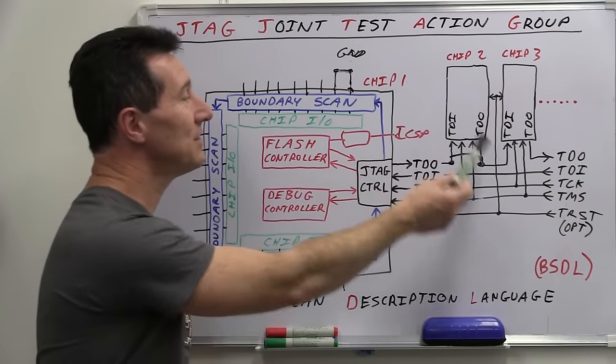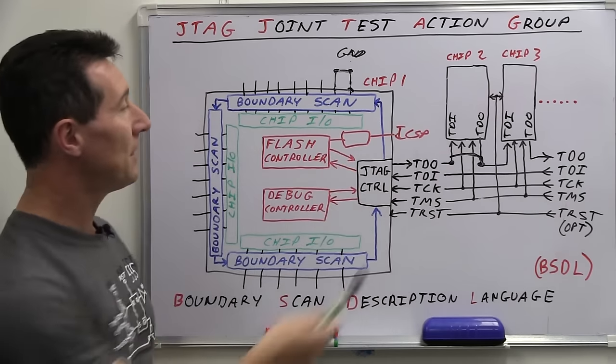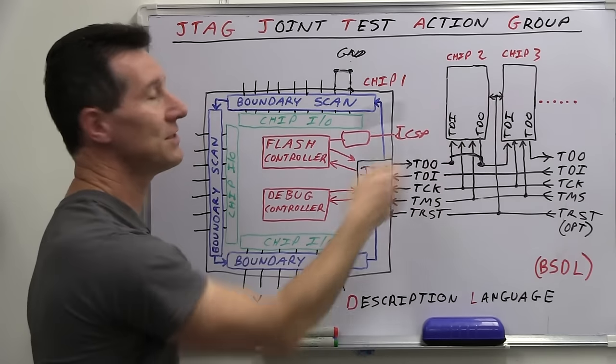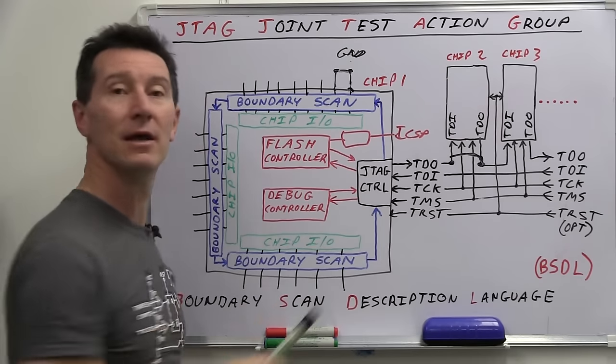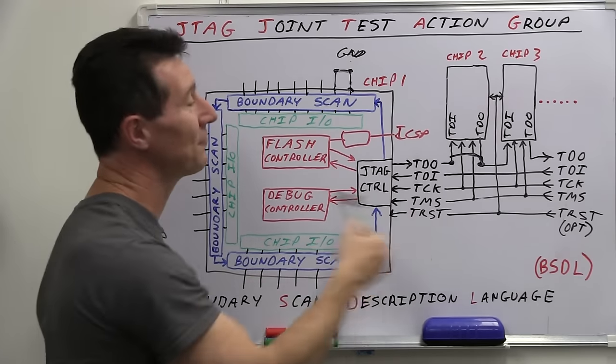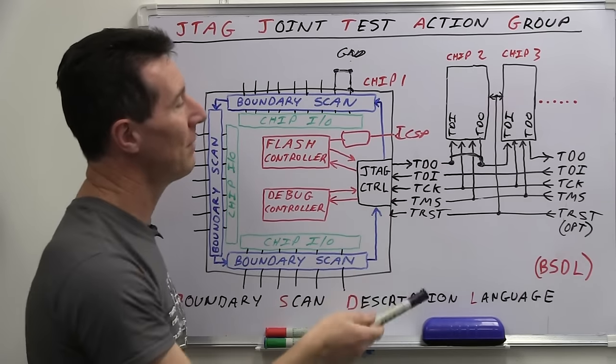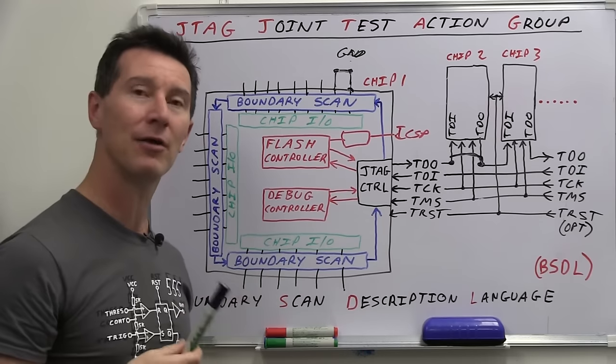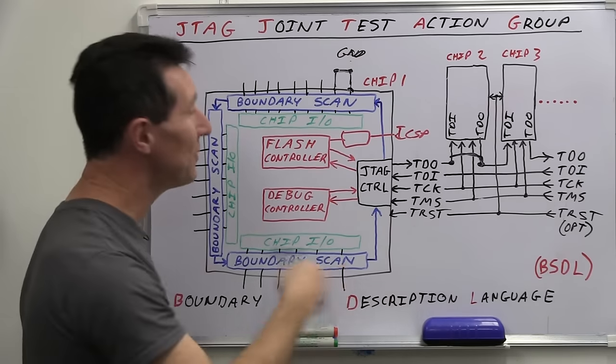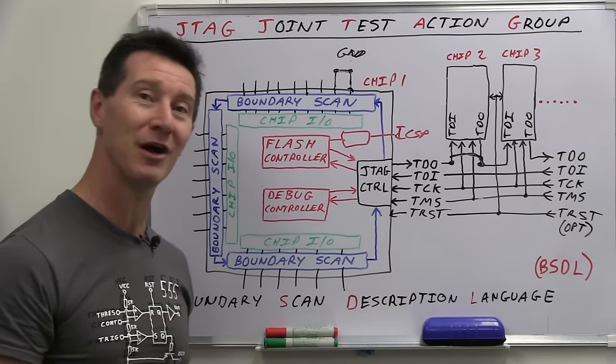Now, when you've got a JTAG daisy chain like this, the maximum system operation of the JTAG chain is going to be determined by the slowest device in the chain. So if one device is only capable of working at 10 megahertz, for example, then that's what you have to run your entire daisy chain at. But they can work from anywhere from 10 up to 100 megahertz or so. They can be actually very quick, but still shifting all that data through, it's not going to be able to read pins in real time, that's for sure.